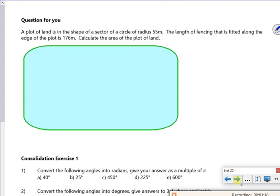Here we go. A plot of land is in the shape of a sector with a radius of 55. Find the length of fencing. Or you're given the length of fencing, so you know what the perimeter is. You need to find theta.